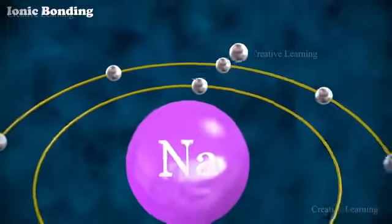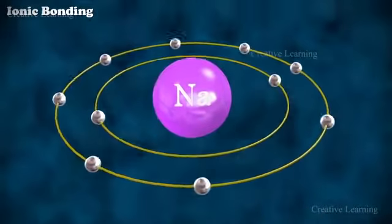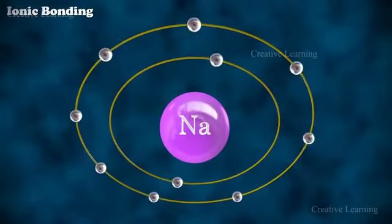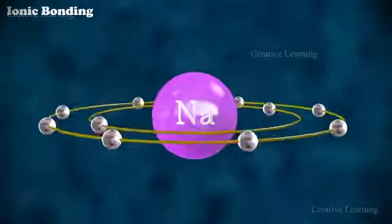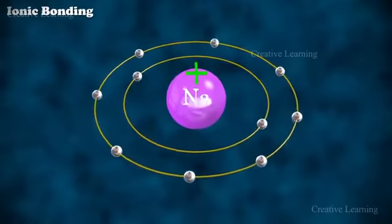Thus, the sodium atom donates its valence electron to achieve stable octet configuration. This creates a positively charged cation due to the loss of electron.